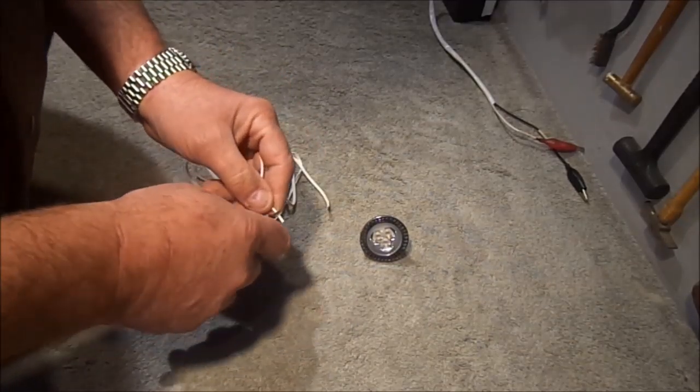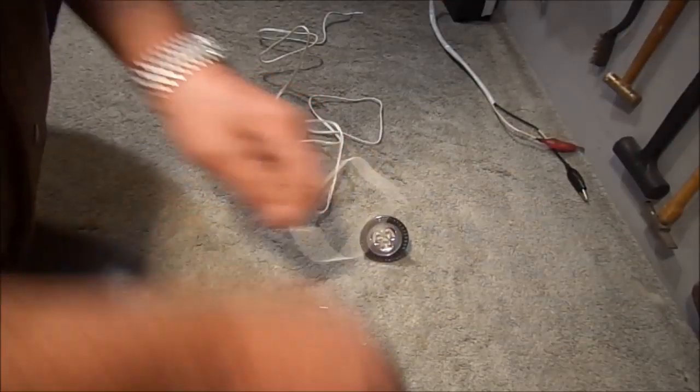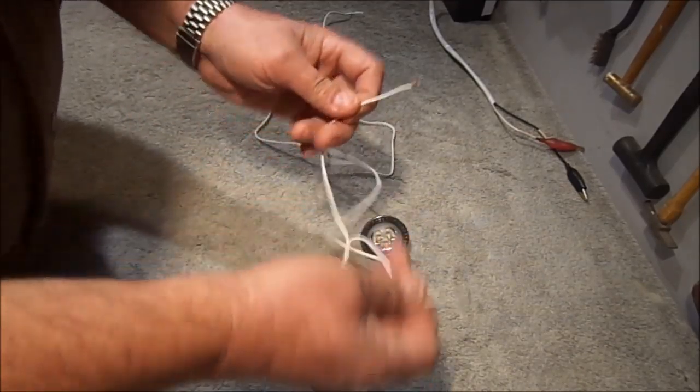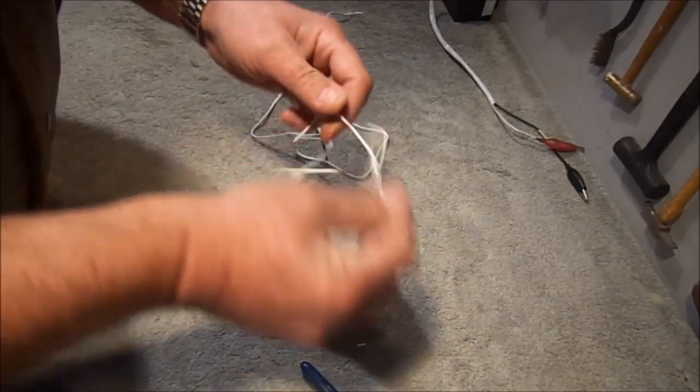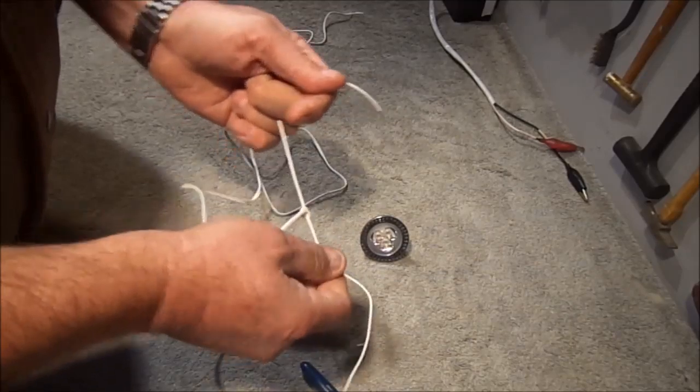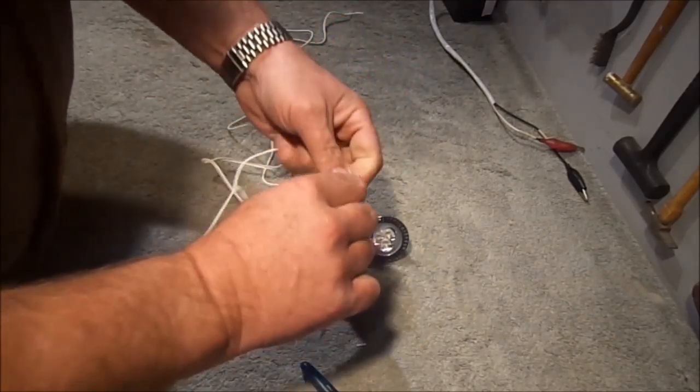What you want to do is strip both ends. On the end that gets the power, pull it wide enough so you can hook it onto a battery. Then tie a knot in it to keep it from spreading.